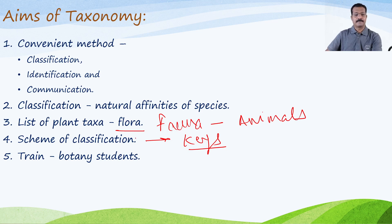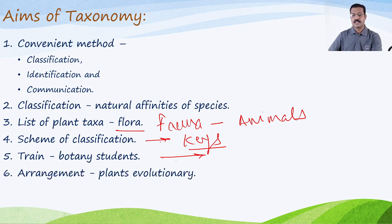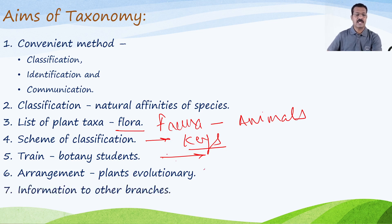To train the students of botany — the future scientists of botany — so they should be familiar with this classification and these keys, and that training is provided by this branch. Next, to arrange the plants in order of their evolution, as evolutionary considerations are also an important aim of taxonomy.